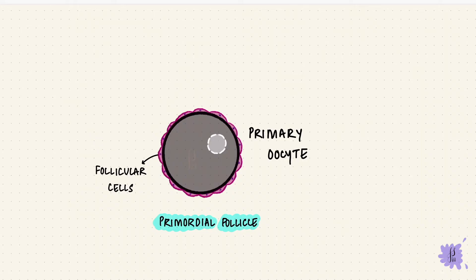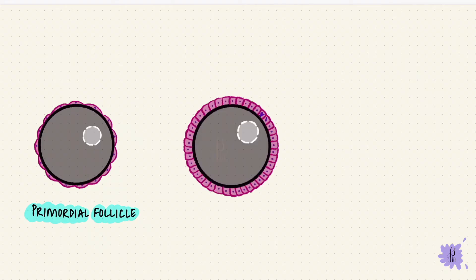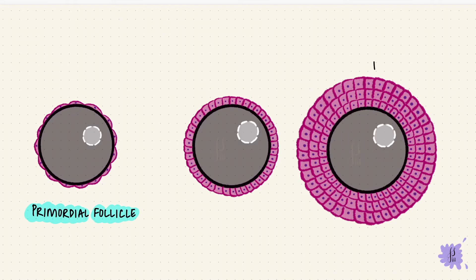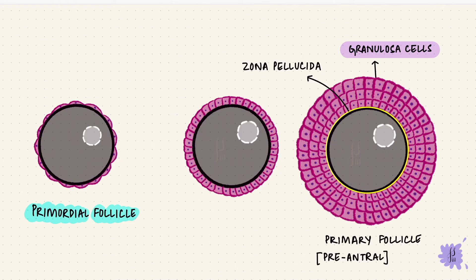So at puberty, some of these primordial follicles grow. Those flat cells become cuboidal. The cells undergo mitosis to form more follicular cells, making it stratified. These are the granulosa cells. The granulosa cells, together with the oocyte, they form a glycoprotein layer around the oocyte. This is called the zona pellucida. This entire structure is the primary follicle, or the pre-antral follicle. And that will make sense in a little while.